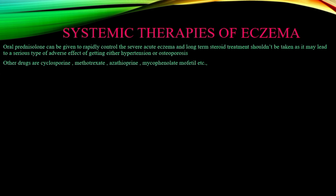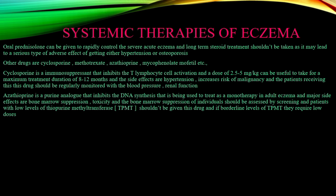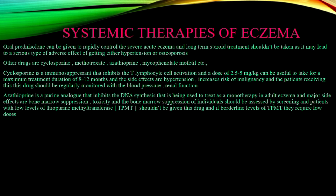Systemic therapies for eczema include oral prednisolone, which rapidly controls severe acute eczema. Long-term steroid treatment is avoided due to serious adverse effects like osteoporosis and hypertension. Other systemic drugs include cyclosporine, methotrexate, azathioprine, and mycophenolate mofetil. Cyclosporine, a calcineurin inhibitor, inhibits T-lymphocyte activation at a dose of 2.5–5 mg/kg for a maximum of 8–12 months; side effects include increased risk of malignancy, and patients must regularly monitor blood pressure and renal function.